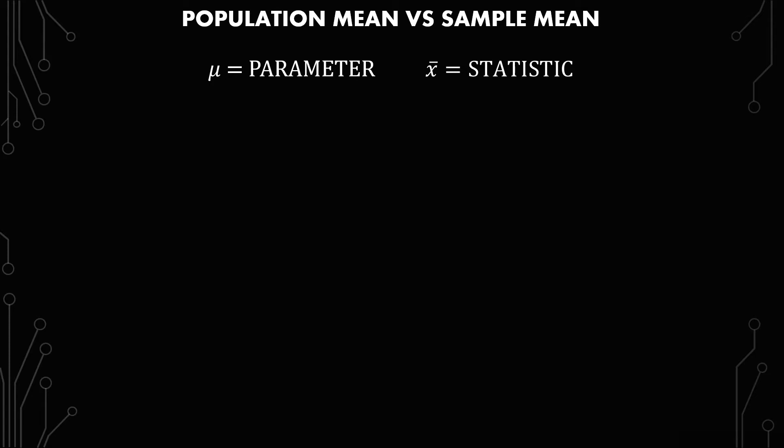X-bar, or the sample mean, is a statistic. It's an approximation in that you're looking to get what the parameter is with limited data. So that's the difference between the two: mu is the parameter — it's what the population is. X-bar tries to get you what the population is with the limited information it has.